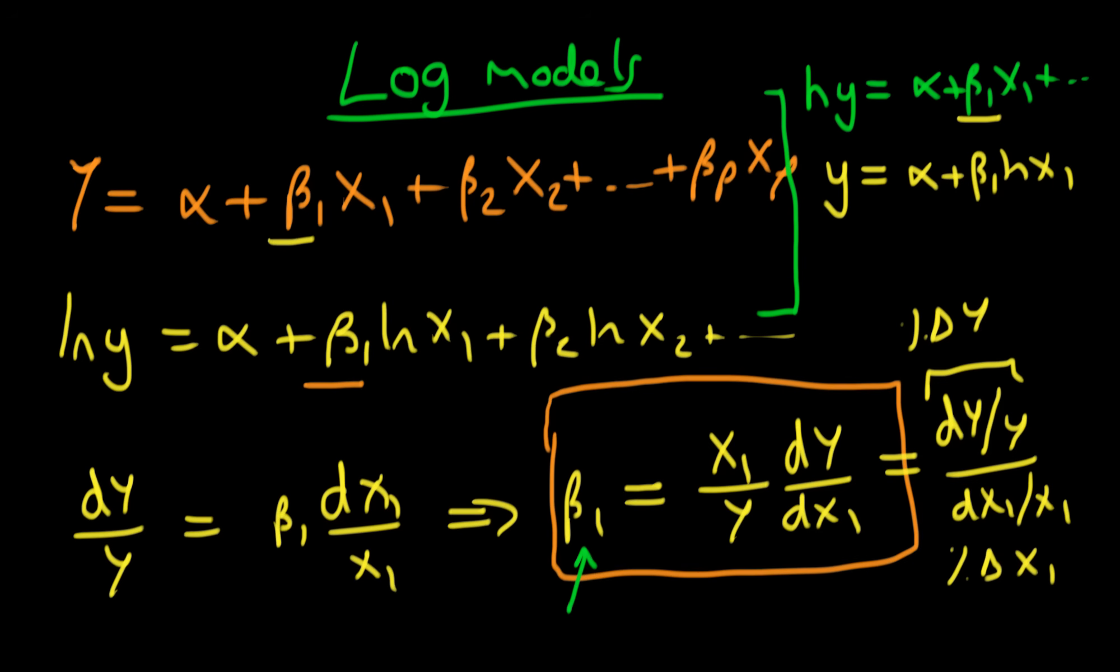When you think about it in these terms, it becomes quite clear why we have these benefits from doing a log log model. One of the benefits is that because it makes all of our variables on the same scale, they're all in percentage terms, we don't have to worry about units. That's quite a nice thing and it actually means that our coefficients can almost be directly compared with one another, which is also another nice property to have when we're looking between different regression models.